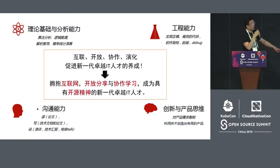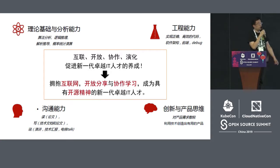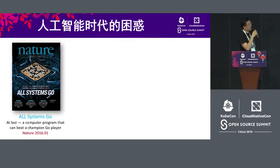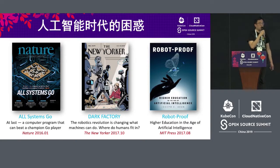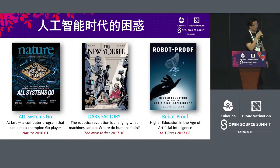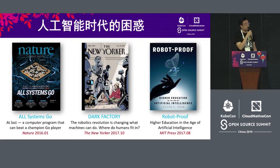With open source spirit, from the university perspective, we want to build the basic skill sets needed for the new generation. We also need to mention AI — artificial intelligence is another major trend alongside open source. I have three photos here. The first is about AlphaGo, which has beaten a champion Go player. The middle picture is a cover article from The New Yorker titled 'Dark Factory.'